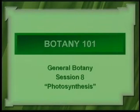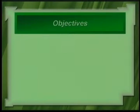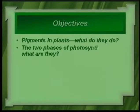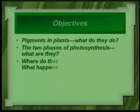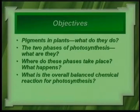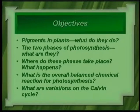We're continuing on photosynthesis. Our objectives today: pigments in plants and what do they do, what are the two phases of photosynthesis, where do these phases take place and what happens during these phases, what is the overall balanced chemical reaction for photosynthesis, and what are variations on the Calvin cycle?